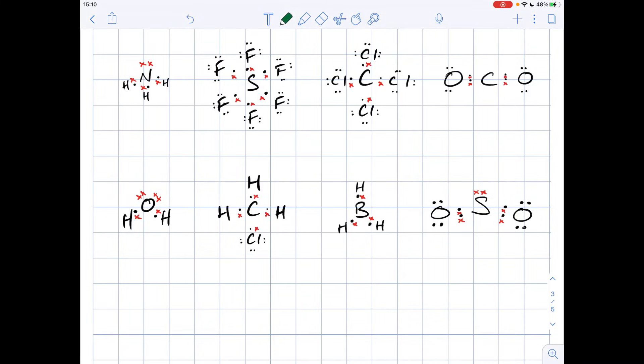I'm going to use these dot and cross diagrams to explain the answers and I would recommend that you always draw one of these when you're working out your answer to these questions. So the first one, ammonia: we haven't got any different terminal atoms, they're all hydrogens, but we have got a lone pair. So this is polar.